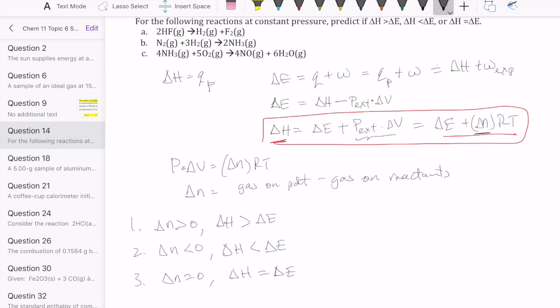The first reaction is two HF gas goes to H2 gas and F2 gas. So the quick way is to just look at our delta N in this case. Our delta N is going to be zero because you have one plus one on the product side minus two. So if that's zero, that means your delta H is equal to your delta E.